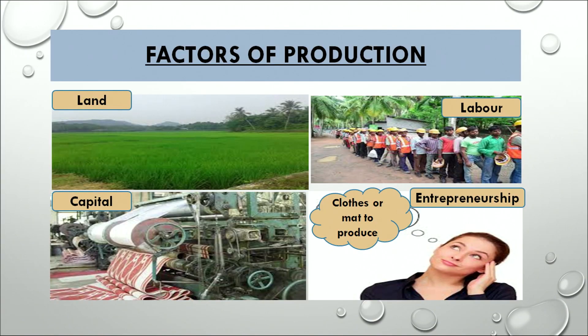We can see that there are four factors of production. The first is land, another is labor, then capital and entrepreneurship. All four factors of production are very relevant for any kind of production process and are used by every producer to have some output. Now we will discuss each and every factor of production in detail.